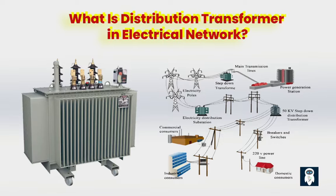Inside the distribution transformer, you will find large coils of copper wire wrapped around an iron core. These coils, known as windings, are responsible for carrying the electrical current. The iron core serves as a pathway for the magnetic field generated by the current, facilitating the transfer of energy from one coil to another without significant loss or breakdown of voltage.